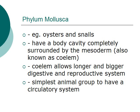The phylum Mollusca consists of members such as oysters and snails. They usually have a body cavity completely surrounded by the mesoderm, also known as the coelum. The coelum allows for a longer and bigger digestive and reproductive system. Mollusca is also the simplest animal group to have a circulatory system.